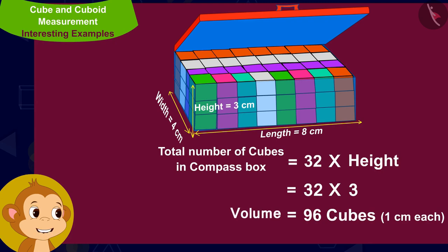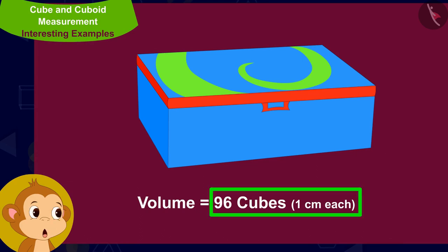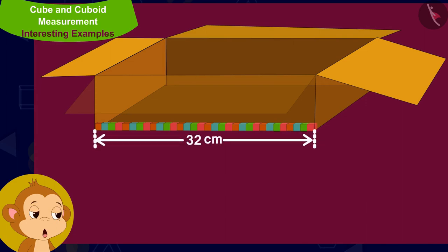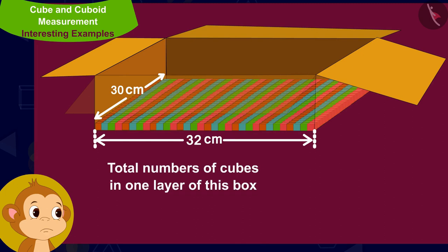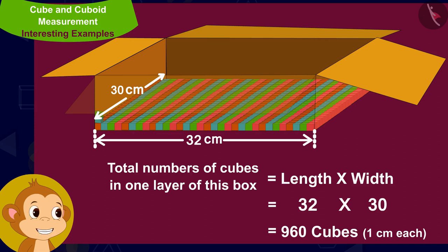In other words, the volume of a compass box is equal to 96 cubic centimeters. Now the length of the cuboid shaped box is 32 centimeters, or 32 cubes of dimension 1 centimeter each. Its width is 30 centimeters, or 30 cubes of dimension 1 centimeter each. This means that in one layer of this box there are 32 times 30, which is 960 cubes of dimension 1 centimeter each.